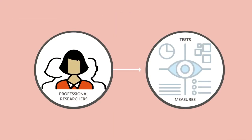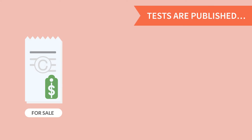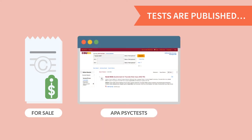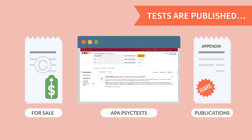Tests and measures are created by professional researchers, but how they are published varies, which impacts how we can find them. Typically, tests are published commercially with a for-profit publisher, in a subscription library database like PsychTest, or as an appendix with a research publication.